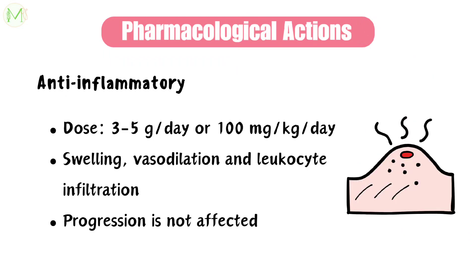To be an anti-inflammatory drug, the dosage required is 3–5g per day or 100mg per kg per day. At this dose, it suppresses the signs of inflammation like pain, tenderness, swelling, vasodilatation, and leukocyte infiltration. However, the progression of the underlying disease which caused this inflammation is not affected.